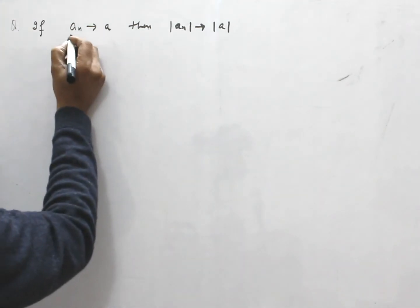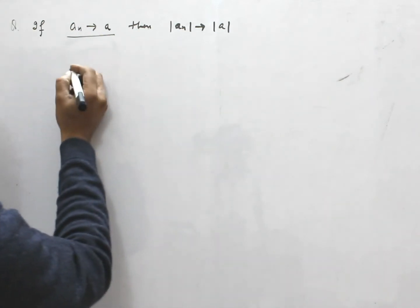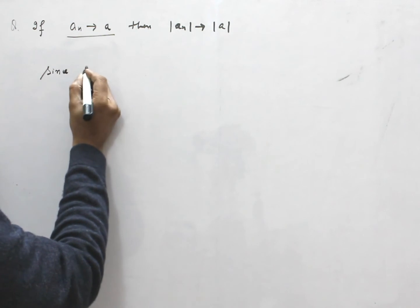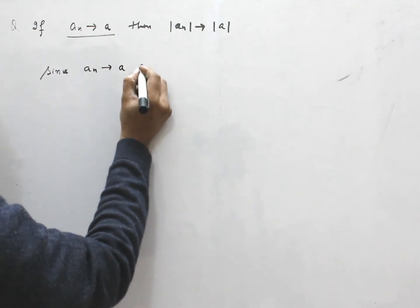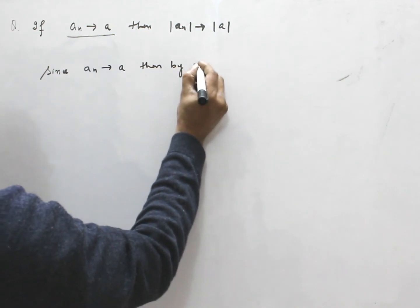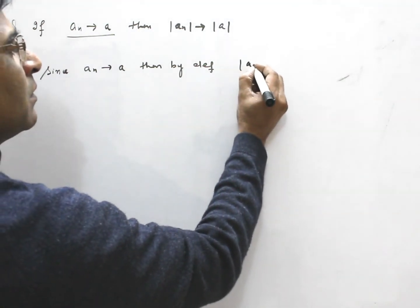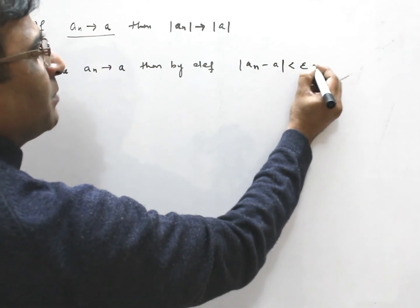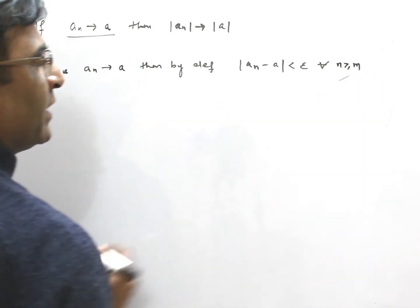First thing, the given part is this. Since a n converts to a, then by definition, a n minus a less than epsilon for all n greater than m.